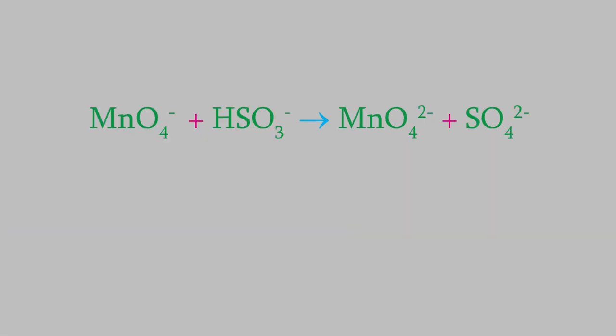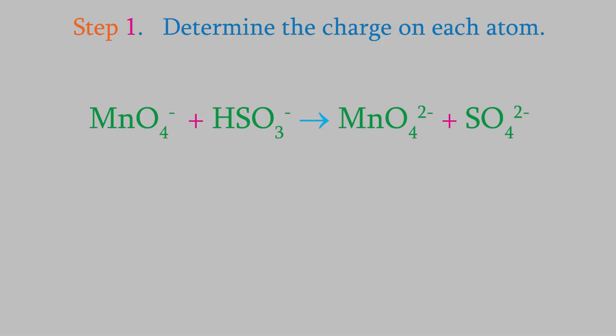This reaction looks a bit similar to the last one we did. We still start with permanganate and bisulfite, and one of the products is the sulfate ion. However, this time the other product is different. We will balance this one using the same procedure we used in the last reaction. Step one is to find the charge on each atom. We already did that in the last reaction for the atoms in the permanganate ion, the bisulfite ion, and the sulfate ion, so we'll just use those results again here.